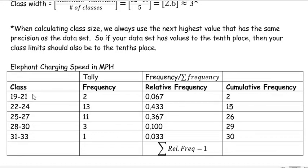So when I look at my classes that I did, I have 19, and then I add three to that, that gives me 22. I add three to that, that gives me 25. I add three, I get 28, and I add three, and I get 31.